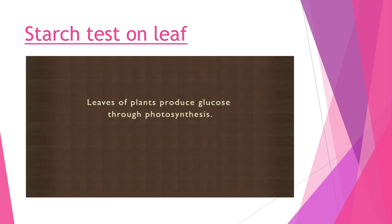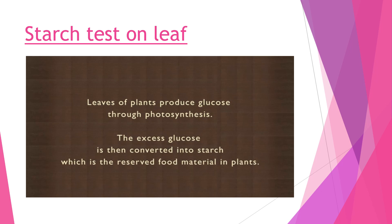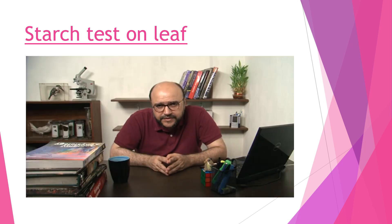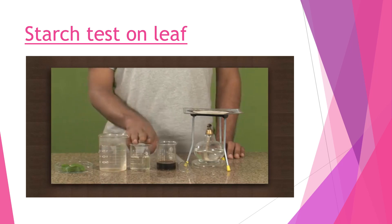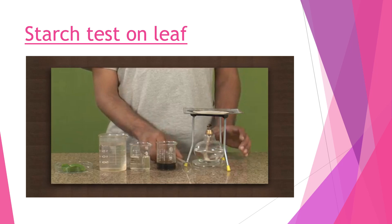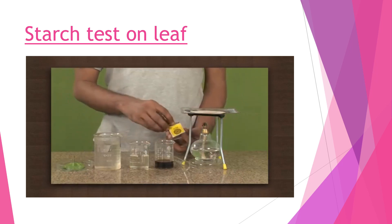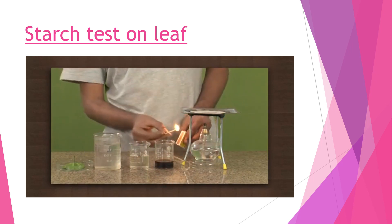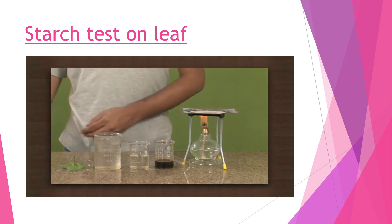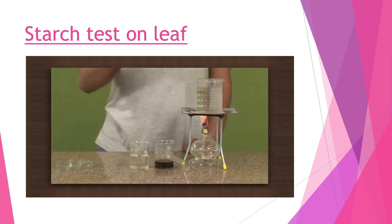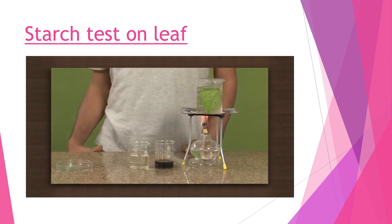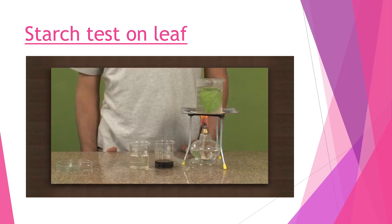Do you know that leaves of plants produce glucose through photosynthesis? The excess glucose is then converted into starch, which is the reserved food material in plants. Let us do a small experiment to test the presence of starch in leaves. We need a leaf, boiling water, alcohol, iodine solution, a test tube, and a spirit lamp. Take a leaf from a plant that has been exposed to sunlight for several hours. Place the leaf in boiling water - this will kill the leaf, disrupt the cell membrane, and soften the cell walls, allowing the iodine to enter the cells and react.